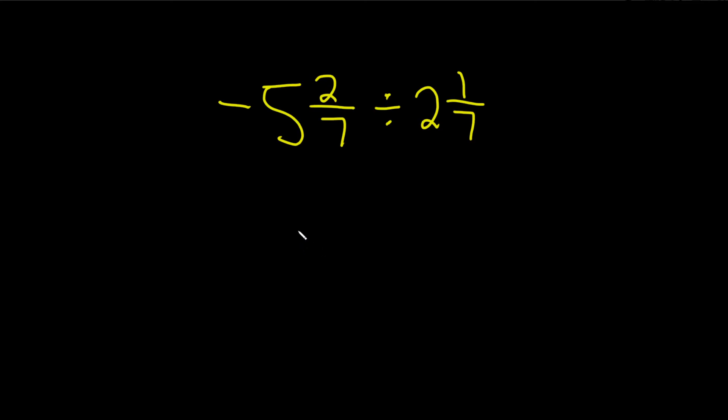Negative 5 and 2 sevenths divided by 2 and 1 seventh. So the first step in this problem is going to be to write these mixed numbers as improper fractions. Here's how you do it.